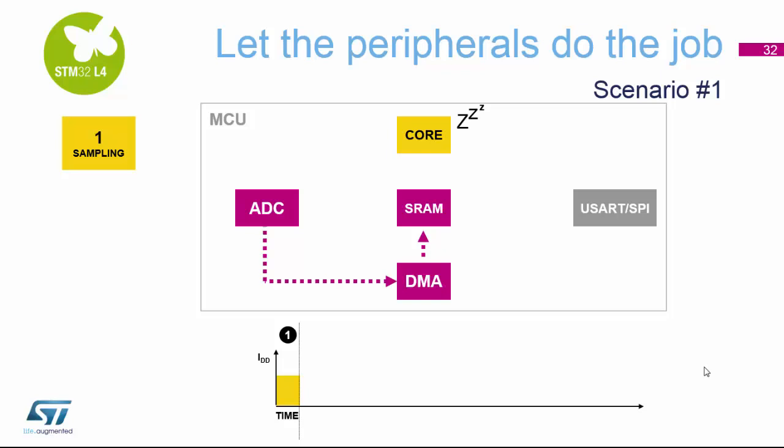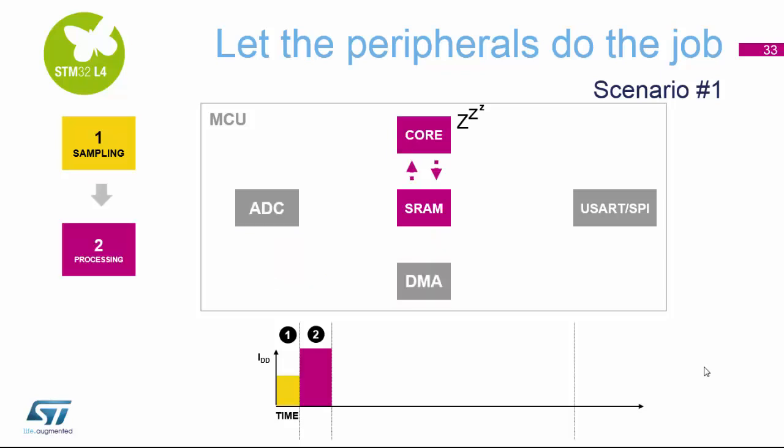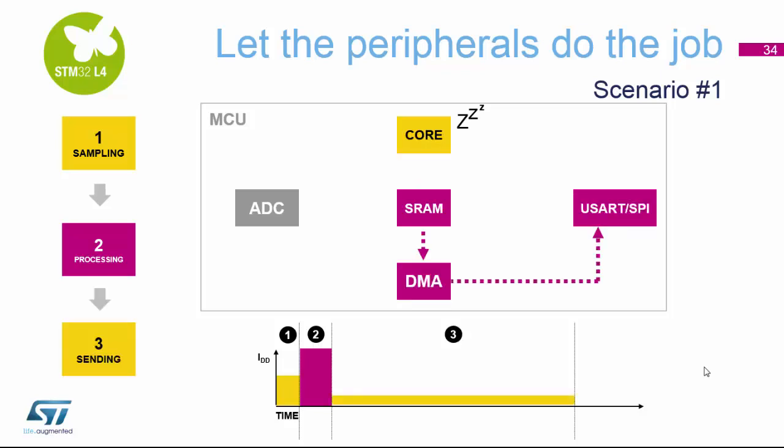We can also let the peripherals do the work using the DMA and put the core into sleep mode. In a typical example, the core would be asleep while the ADC streams data via the DMA into SRAM. Then the core wakes up for a short period to process the received data, and then goes back to sleep after starting the next process, which streams that processed data out via UART or SPI.